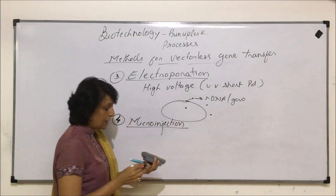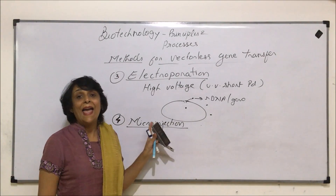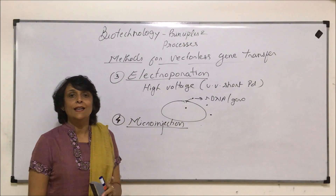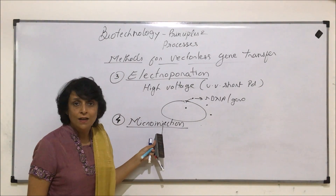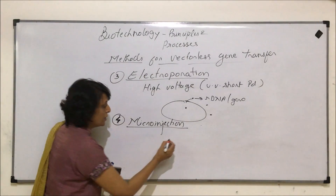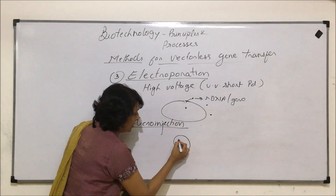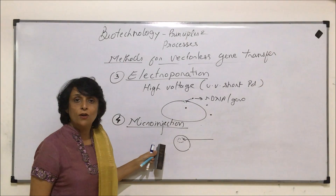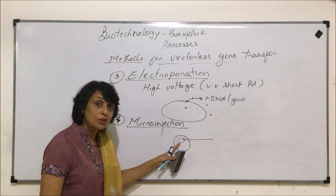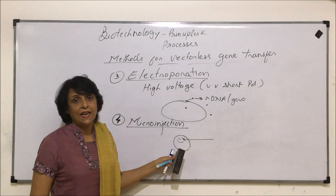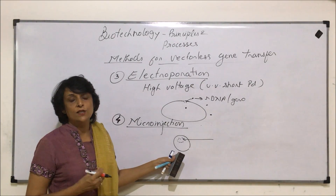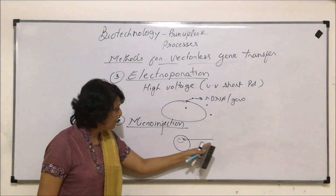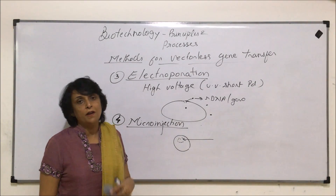The fourth method is called microinjection. It is normally used when you want to introduce the gene into an animal cell. This is a very sophisticated method done under a microscope. Most commonly the cell involved is the egg cell. The gene has to go into the nucleus, not just the cytoplasm. Dealing with a human egg cell is tricky because it is only available every 28 to 30 days — on the 14th to 16th day of the menstrual cycle — so if something goes wrong we must wait another month.